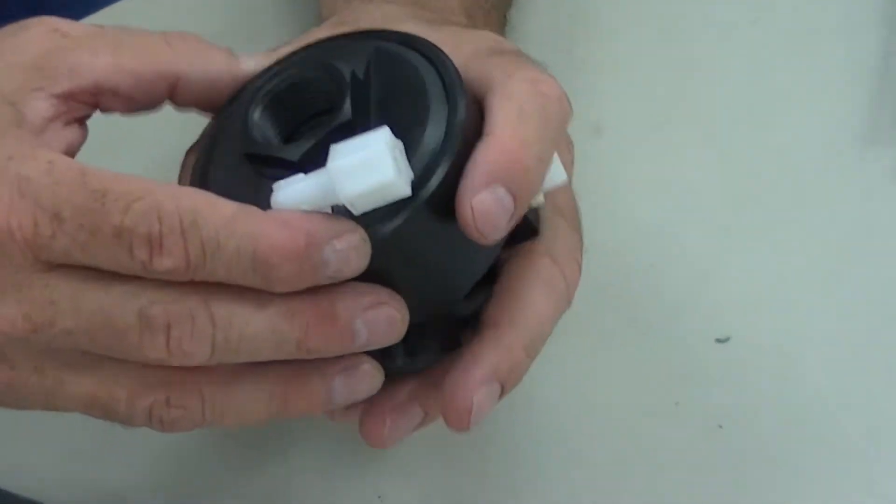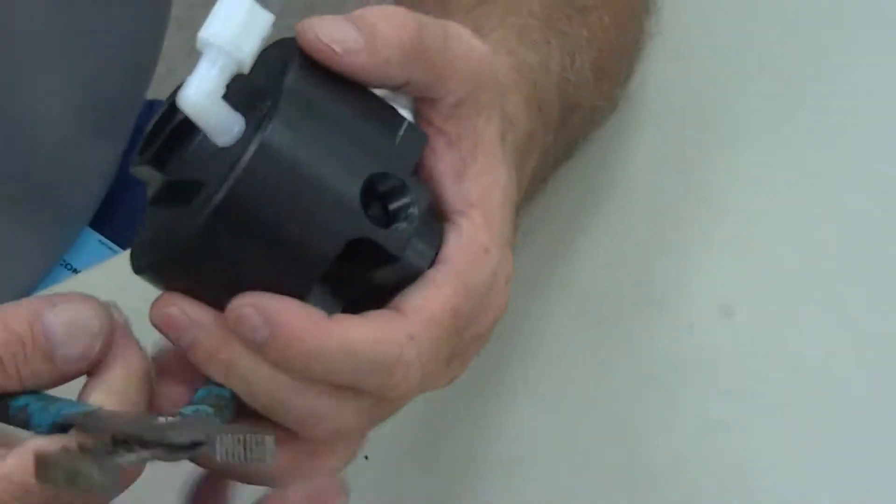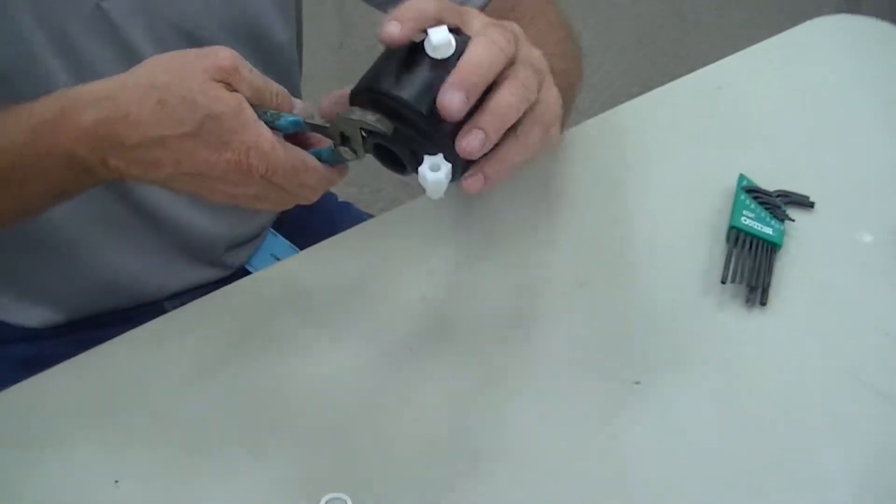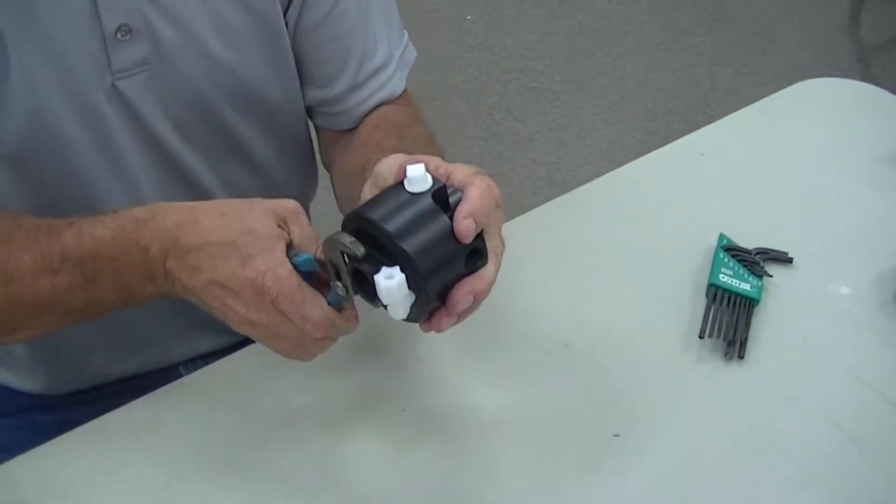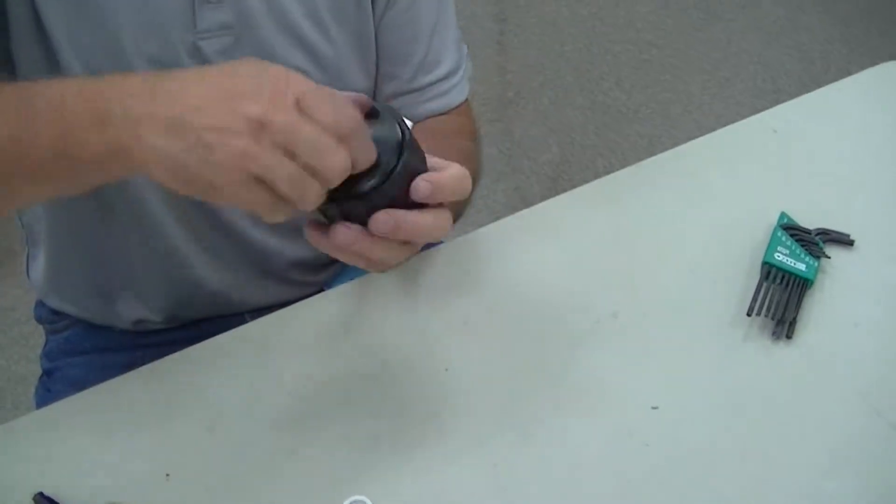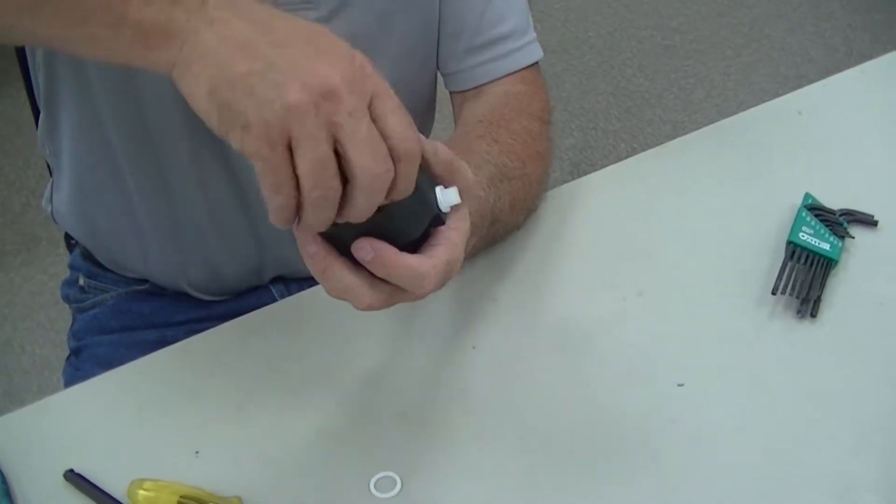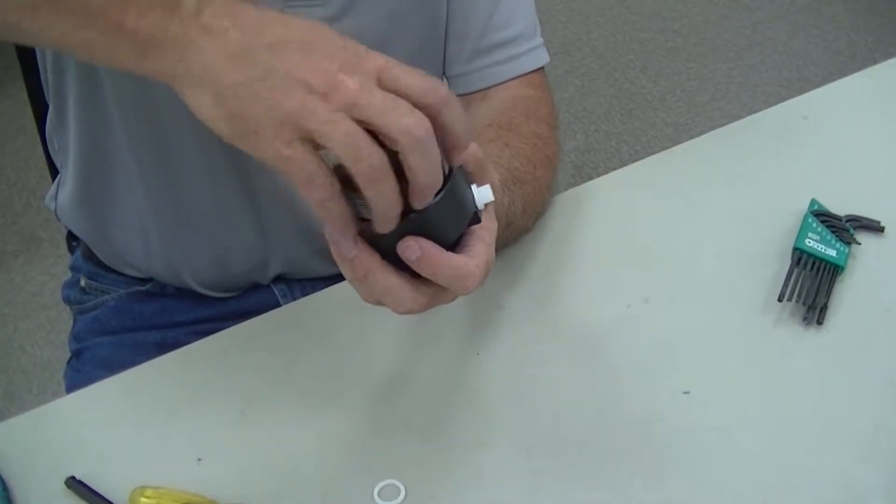Now I've got those pieces apart. I go ahead and I can remove the top half of the bonnet from the lower. What I want to do is go ahead and unscrew this. Lots of threads and this is what seals the air side from the fluid side.